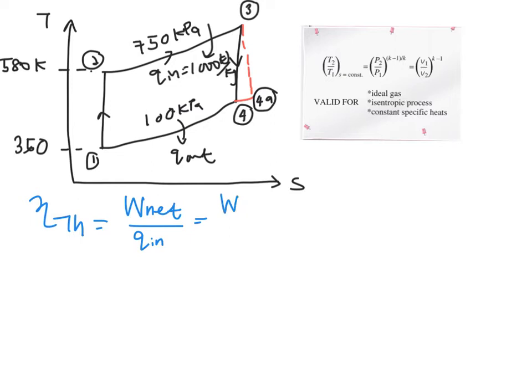So the work net here is the work that happens between your turbine minus with your pump over with your Qin. Or you can make use of 1 minus Qout over your Qin.